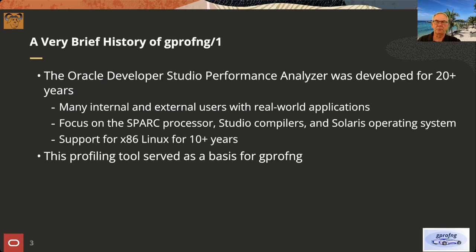It all started with the Oracle Developer Studio Performance Analyzer, a profiling tool developed for over 20 years that built up quite an impressive user base. Users came with real-world applications — very often pretty ugly ones — which battle-hardened the tool along the way. The focus was on the SPARC processor, Studio compilers, and the Solaris operating system, and while there was an x86 Linux version, it was not as well developed. We took that source code as the basis for our work on GPROFNG.